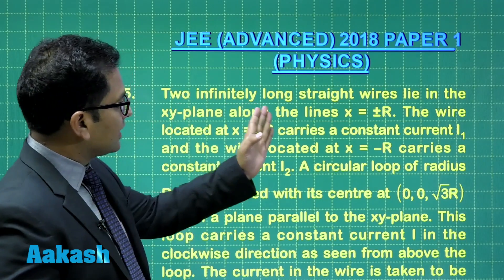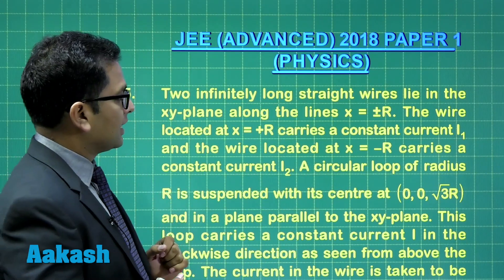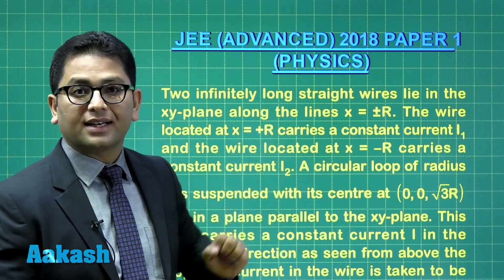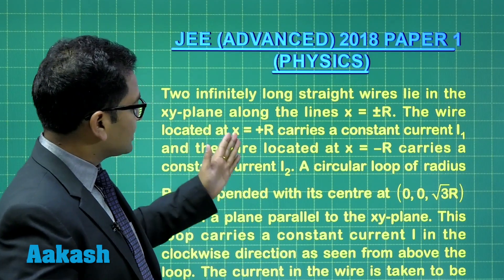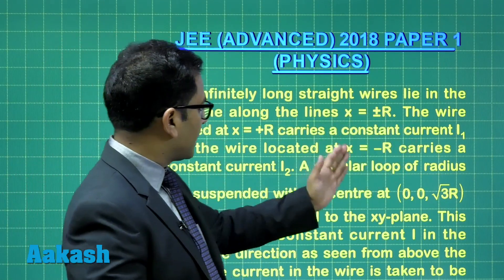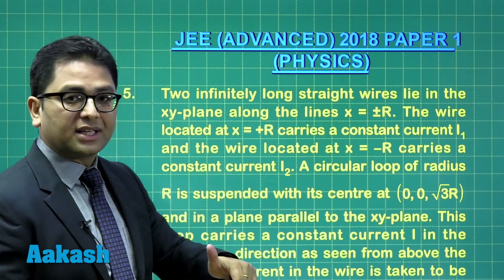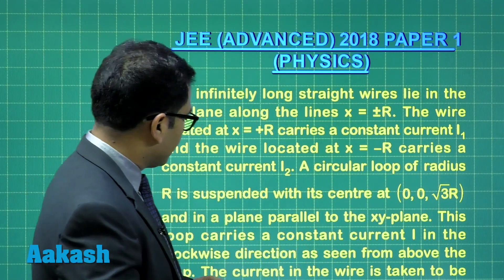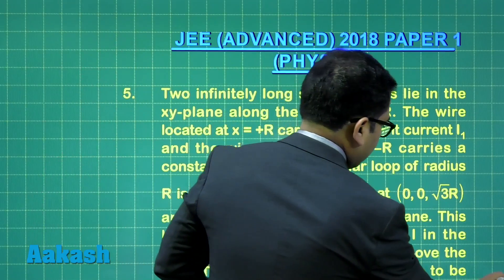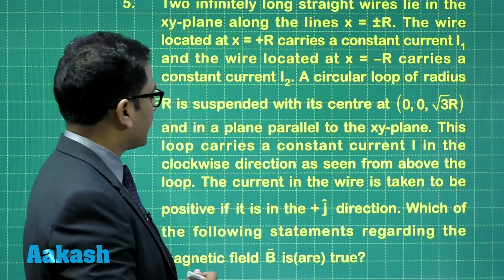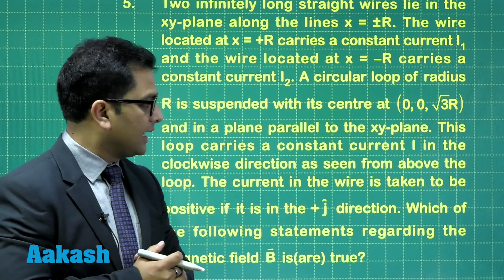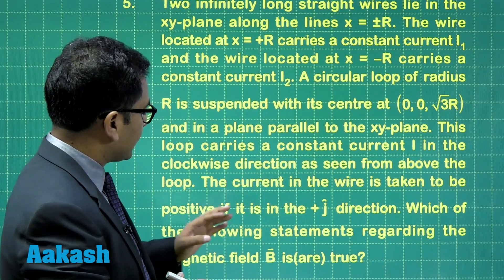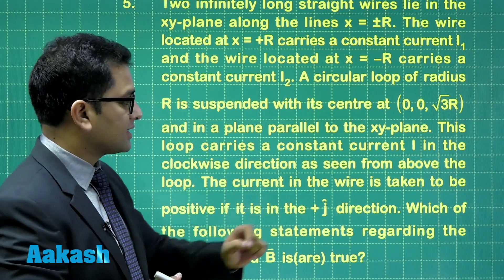Two infinitely long straight wires lie in the xy-plane along line x equals to plus minus r. So at x equals to plus minus r, there are two infinitely long wires. Plus r carries a current i1, minus r carries a current i2. Apart from that, there is a circular loop of radius r, and the plane is parallel to the xy-plane, and it carries a current i. The loop is carrying current i in the clockwise direction as seen from above.